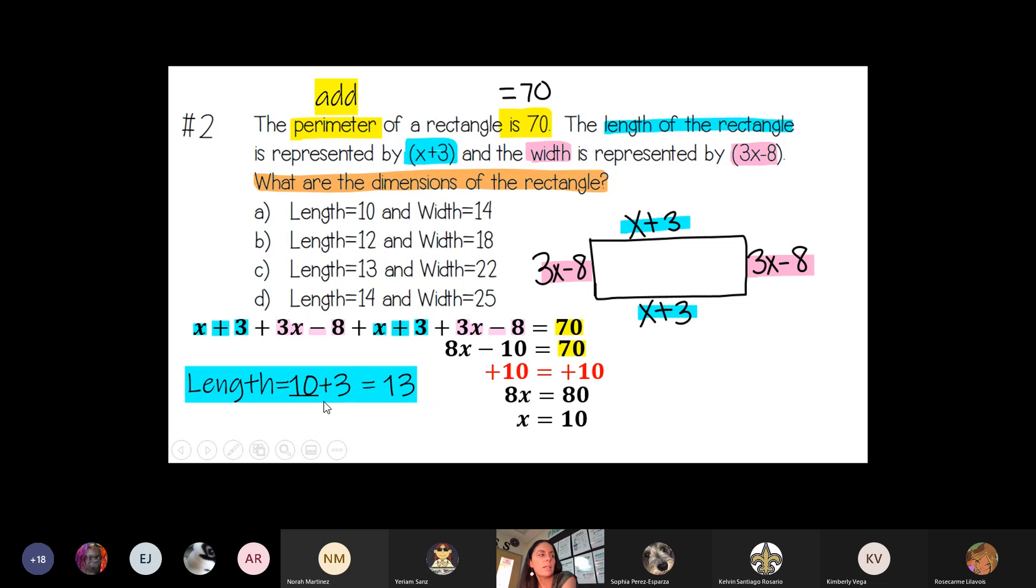So my length was equal to 10 plus 3, so that means my length is 13. And my width is equal to 3 times 10 minus 8, so my width is equal to 22. So the answer is C.